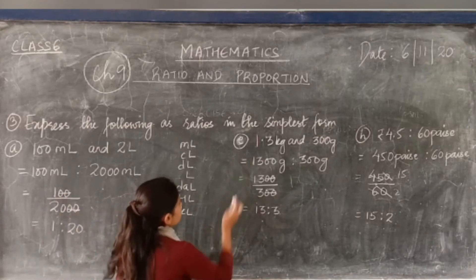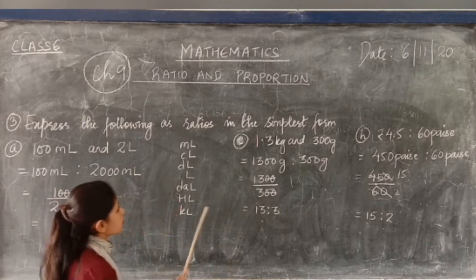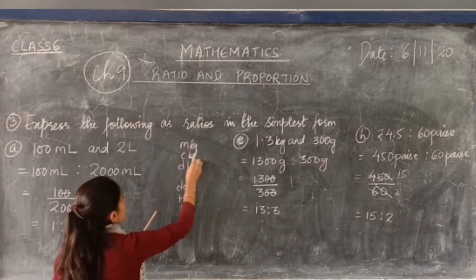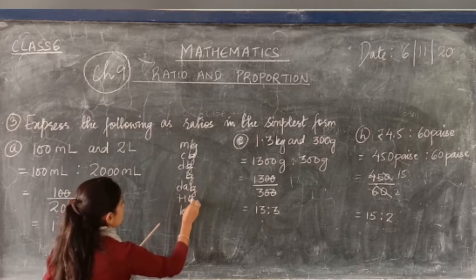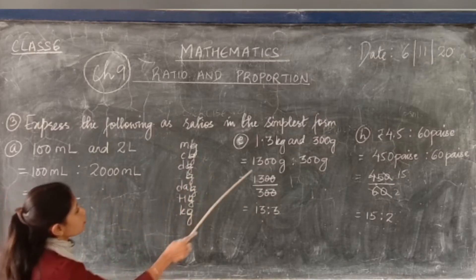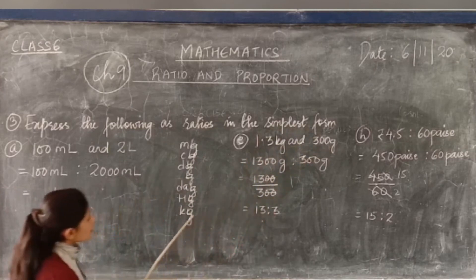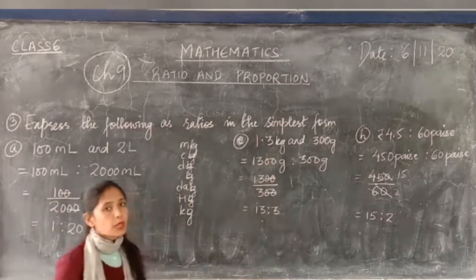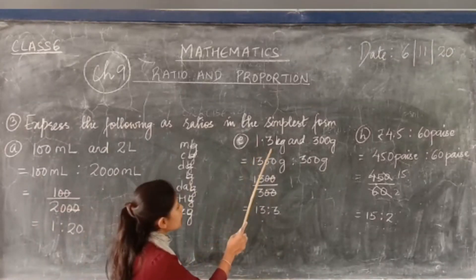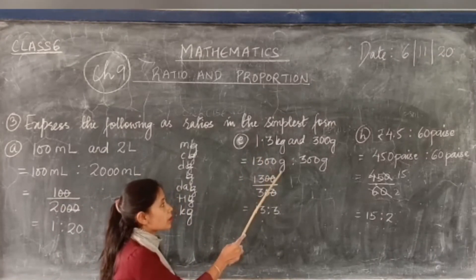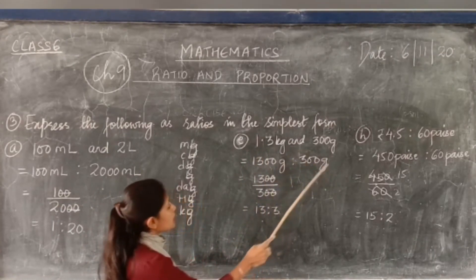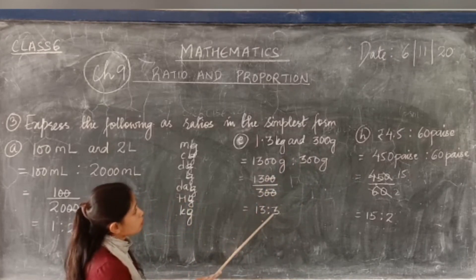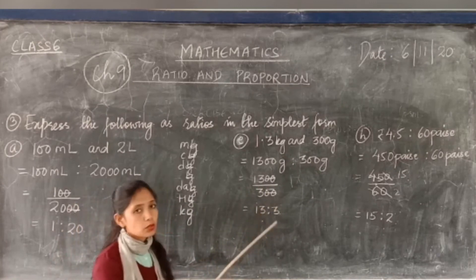Next is 1.3 kg and 300 grams. Convert kg into grams — 1 kg is 1000 grams, so 1.3 kg is 1300 grams. Write 1300 is to 300 grams. Remove the units and write 1300 divided by 300, cancel the zeros — the answer is 13 is to 3.